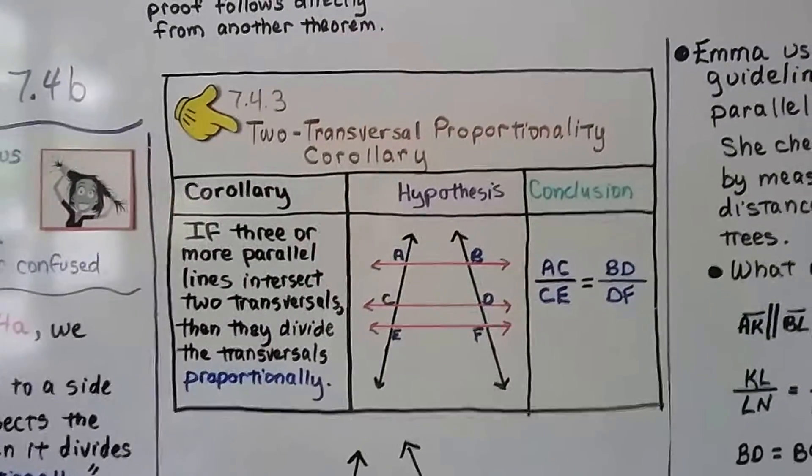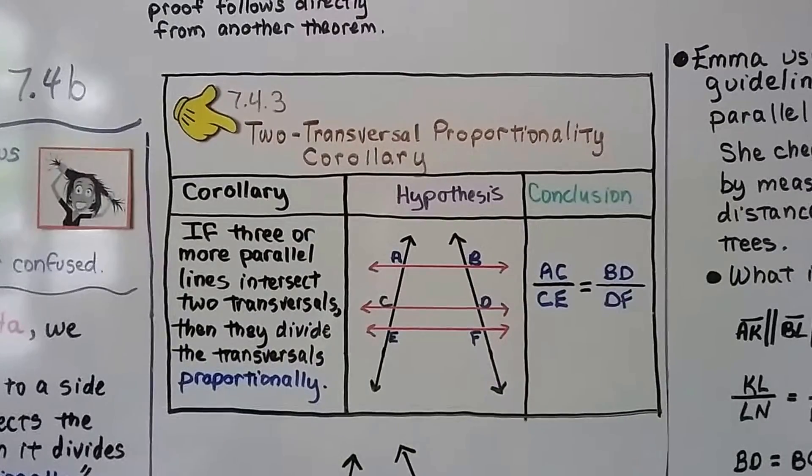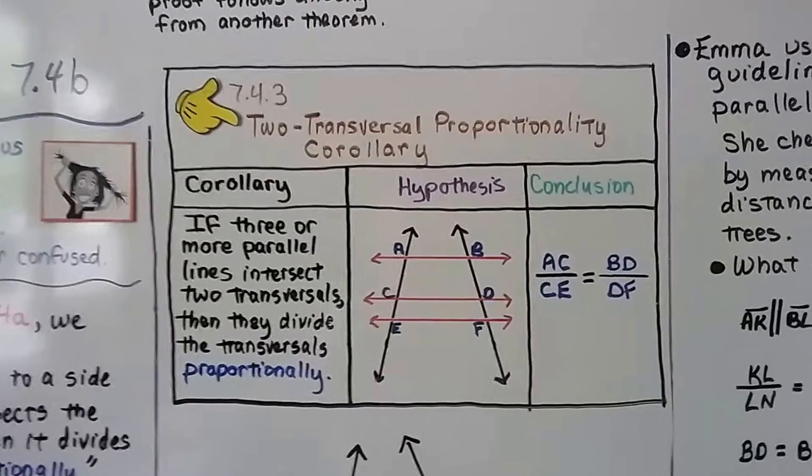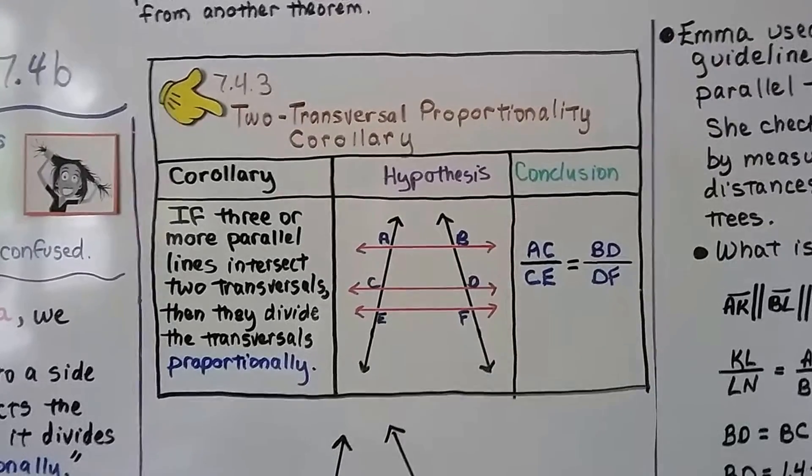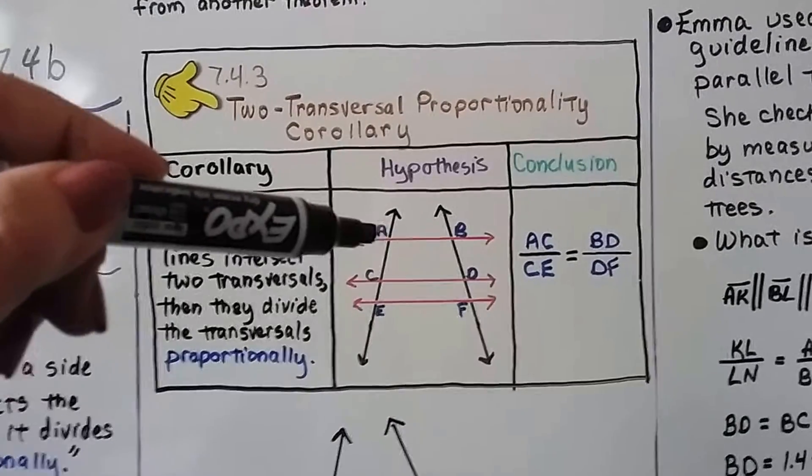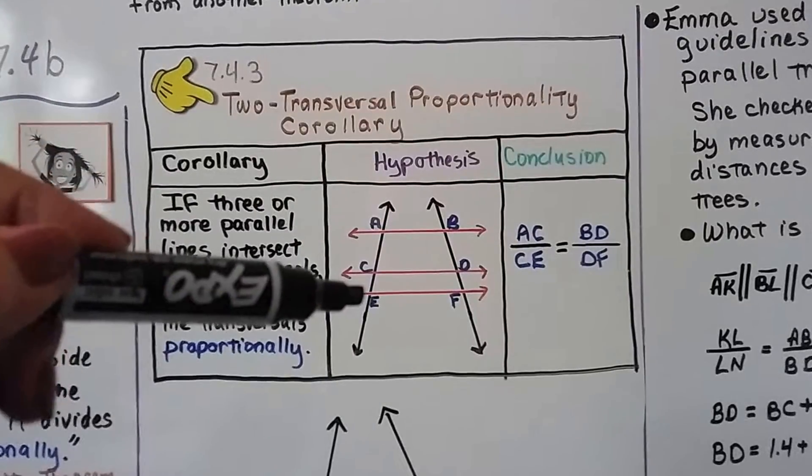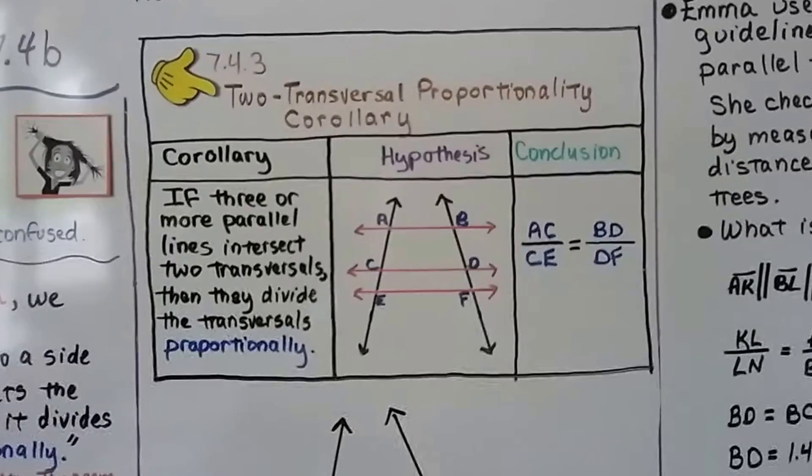Which leads us to the two-transversal proportionality corollary. And it says if three or more parallel lines intersect two transversals, then they divide the transversals proportionally. So we have this segment AC over CE is equal to BD over DF, and they're proportional.